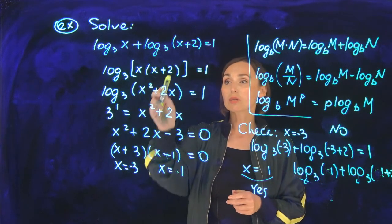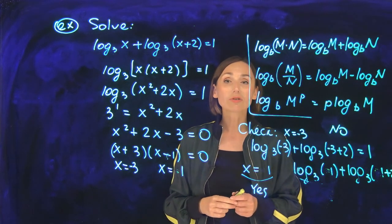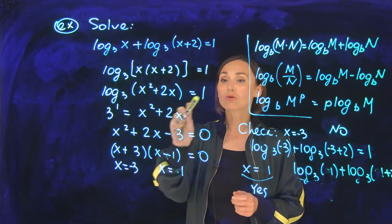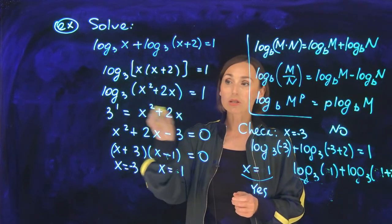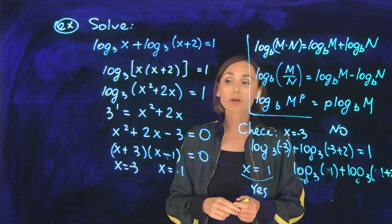Now x times (x + 2) is x² + 2x. After that I can go to the equivalent exponential form: base to the power equals the expression inside the log. So 3¹ = x² + 2x.